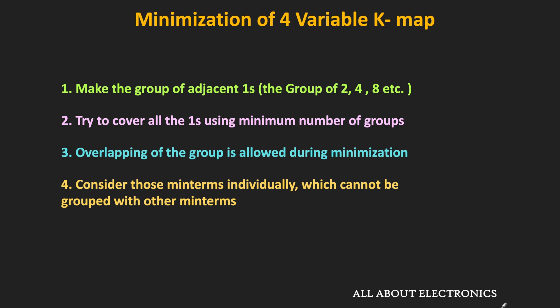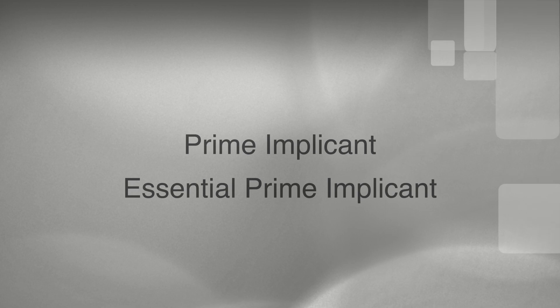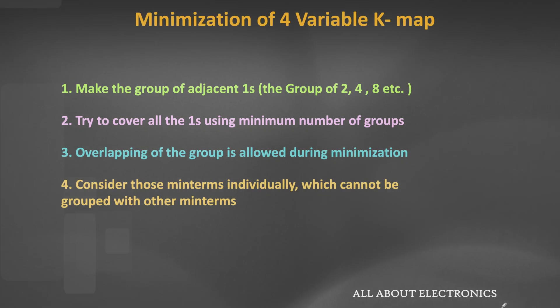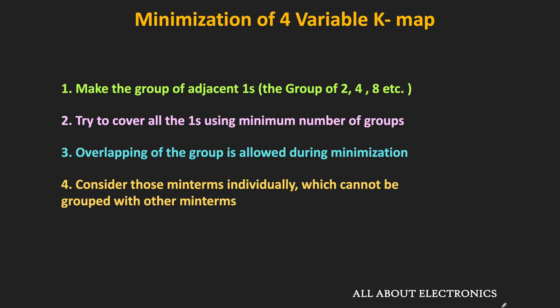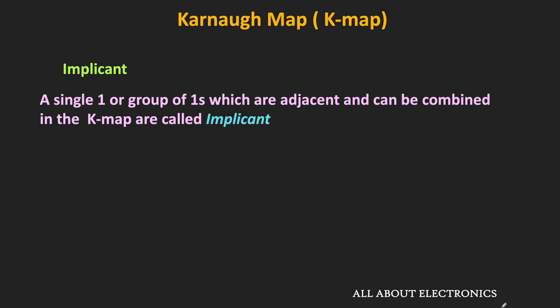There is a systematic way for the minimization. But first, let us understand two terms: the prime implicant and the essential prime implicant. And first, let us understand what is an implicant.